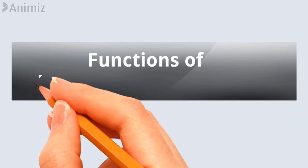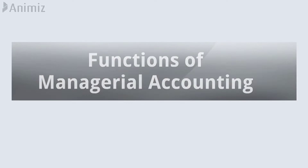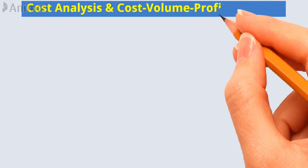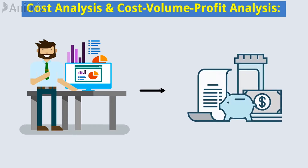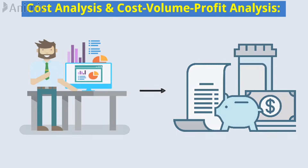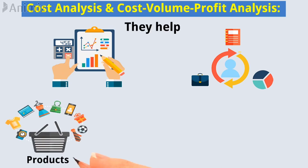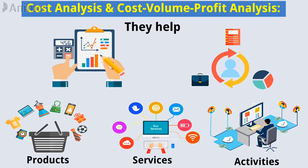Functions of managerial accounting. Number 1: Cost Analysis and Cost-Volume Profit Analysis. One of the primary responsibilities of managerial accountants is cost analysis. They help determine and allocate costs to various products, services, or activities within the organization.